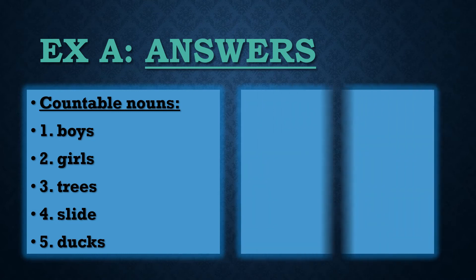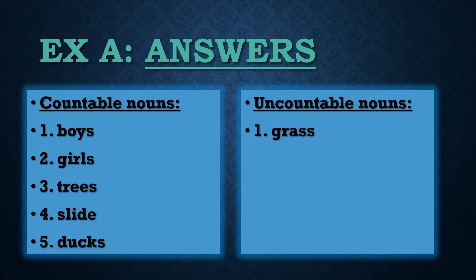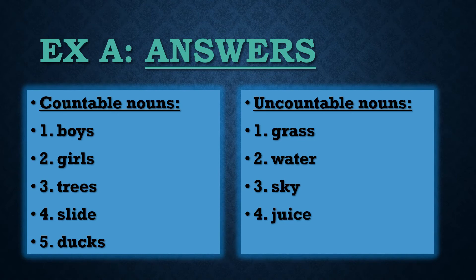Now let us go ahead and see the uncountable nouns in the picture. The first one is grass — the whole picture is full of grass. The second is water — we can see a small pond in the corner. The third is sky. The fourth could be juice — there is a jug and two glasses which we assume are full of juice. Number five could be rice — in a platter, there is some rice. If you notice any other uncountable nouns, you can write those as well.